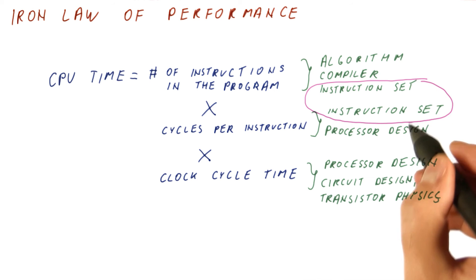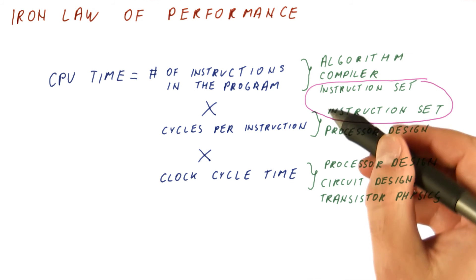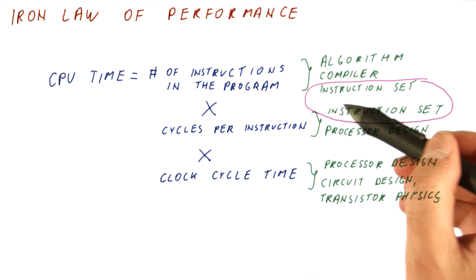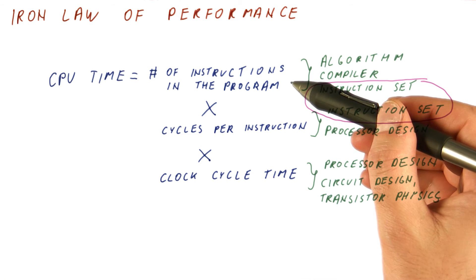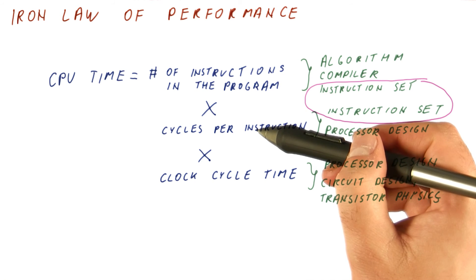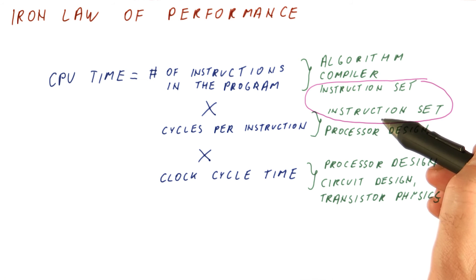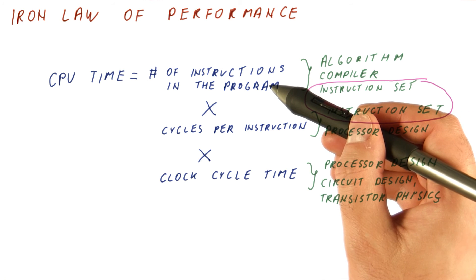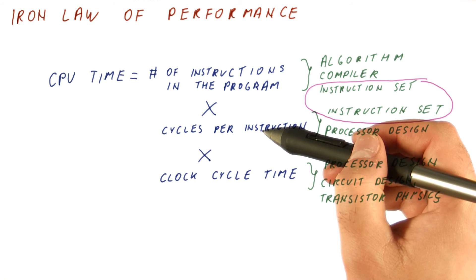So really, computer architecture will affect the instruction set. And here, we have a choice of having complex instructions, where we spend fewer of them per program, but takes more cycles to do each. Or we can have simpler instructions, where we have more of them in a program, but we spend fewer cycles per instruction.